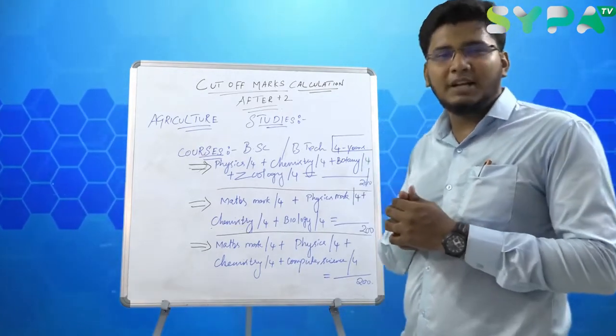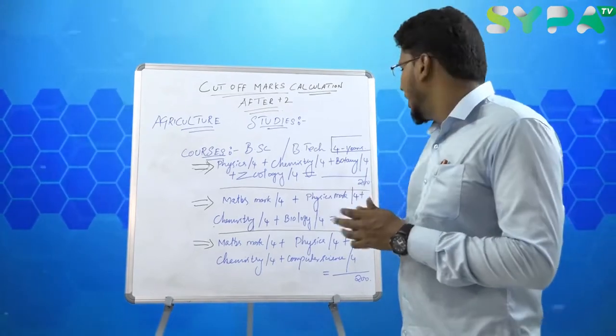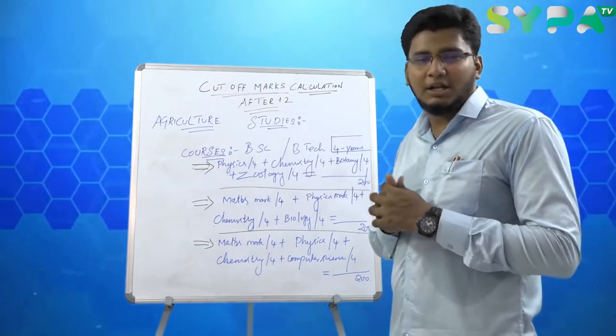Now, for Pure Science students, how to calculate cutoff marks? Physics divided by 4, Chemistry divided by 4, Botany divided by 4, and Zoology divided by 4 equals 200. This is the Pure Science cutoff mark.